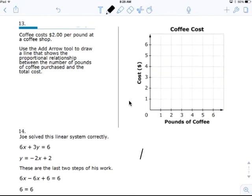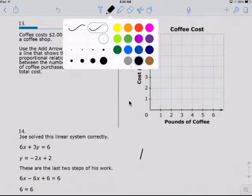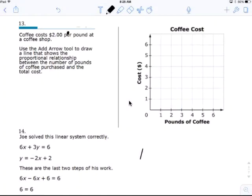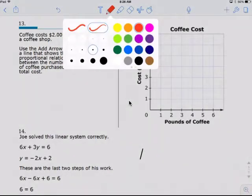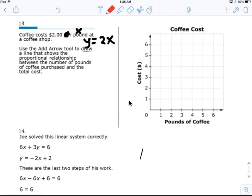You should know how to do 13. Coffee costs $2 per pound x at a coffee shop. So y equals 2x. Use an arrow to draw a line that shows the proportional relationship between the number of pounds of coffee purchased and the cost. So you just need to draw that line. That's all it is.